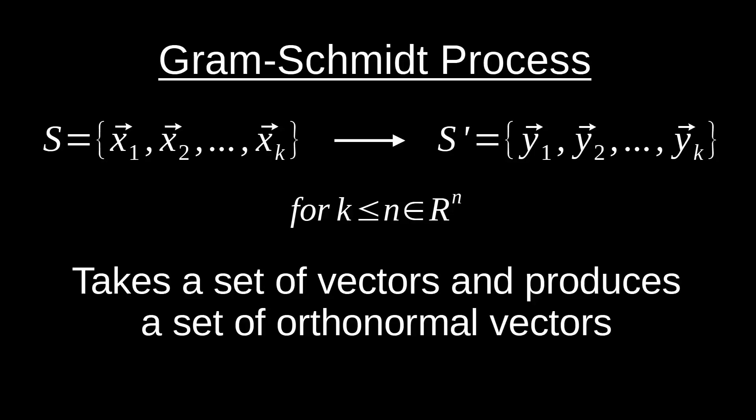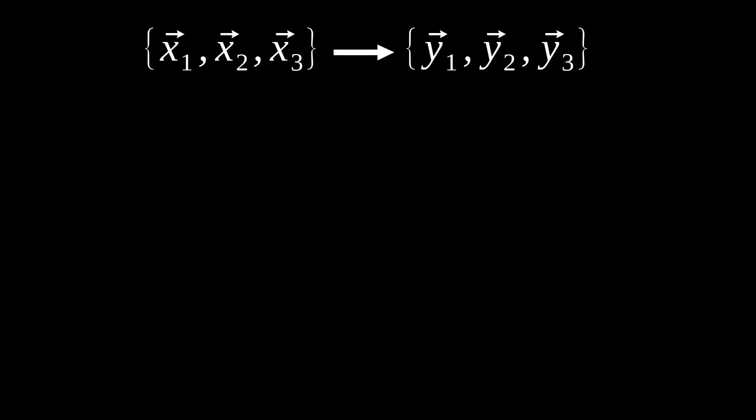And why might we want to do this? With a set of orthonormal vectors, we have a well-understood relationship between all the vectors in the set that we can exploit later on in some larger processes. We know that a set of orthonormal vectors are all orthogonal — the inner product between all the vectors is zero — and they are normalized, so the two-norm of each vector is one. So we're going from some set of vectors X to some set of vectors Y, where Y is our orthonormal set.